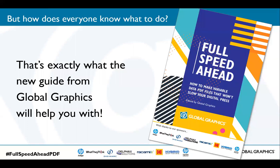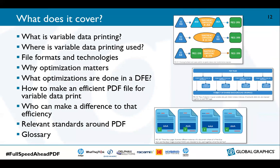The obvious question then is: how does everyone know what to do? That's why we've produced a new guide called 'Full Speed Ahead.' It's specifically designed to help both artists and operators and software engineers understand what things in a PDF file can slow the DFE down, with hints on how to avoid those slowdowns. It covers what variable data printing is, where it's used, file formats and technologies, why optimization matters, and then dives into detail about how to make an efficient PDF file for variable data print. There are also appendices on relevant standards around PDF and a glossary.